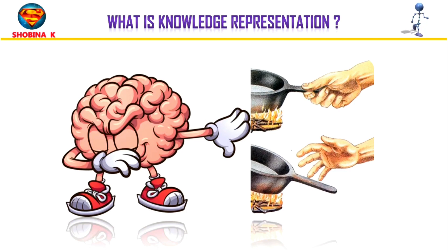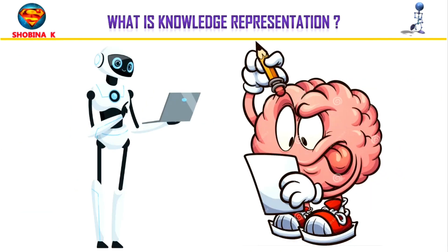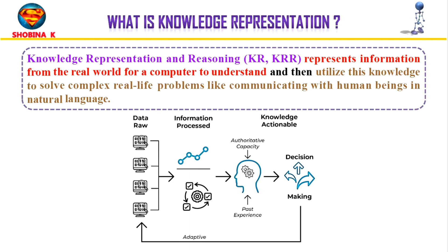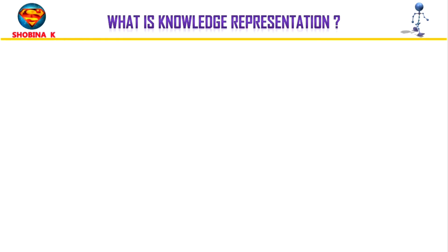If we want to impart this complex knowledge into a machine, we need to give more advanced information to AI, which in turn resulted in the concept of knowledge representation in artificial intelligence. Knowledge representation and reasoning, also known as KRR, represents the information from the real world for a computer to understand, and then utilizes this knowledge to solve complex real-world problems like communicating with human beings in natural language.